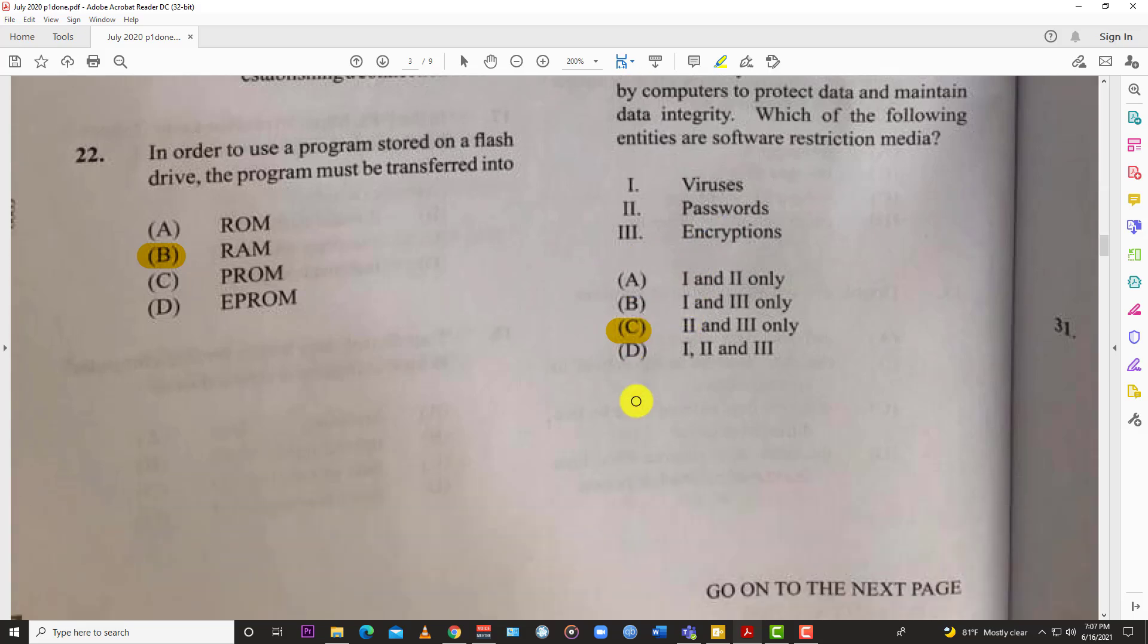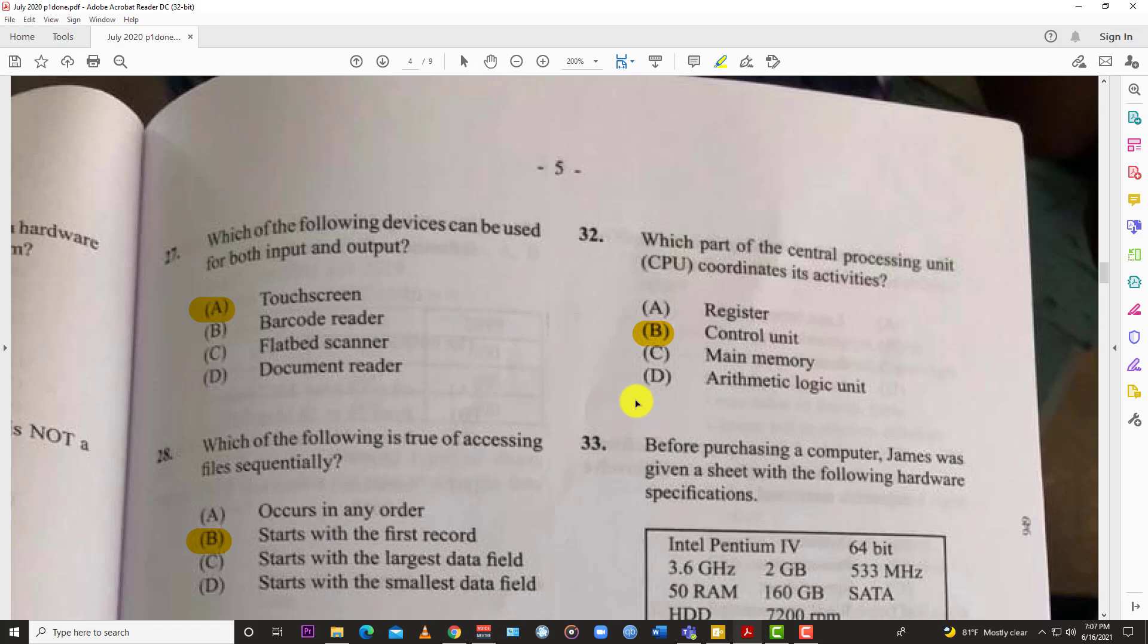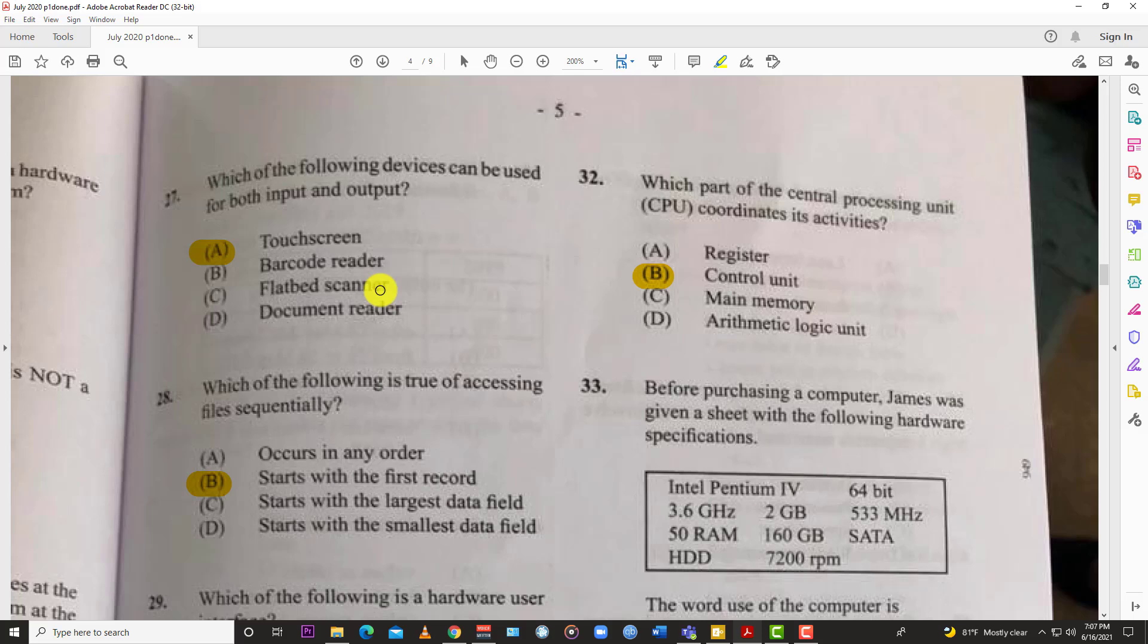Number twenty-seven: which of the following devices can be used for both input and output? Very straightforward - A, the touchscreen, because I can touch the screen and still read on the screen. That's a very obvious answer.